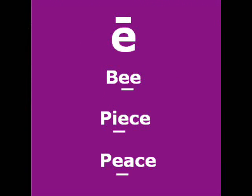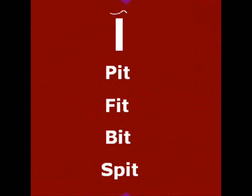E as in bee, peace — this particular symbol always sounds as 'ee' and not 'E'. This next symbol, however, sounds as 'i' as in pit, fit, bit, spit. So for any word where your dictionary shows this second symbol, it sounds as 'i' and not 'ee'.